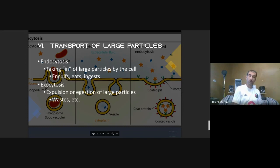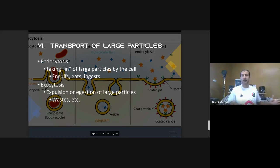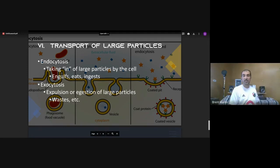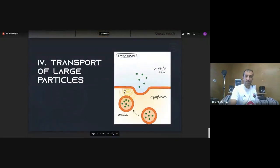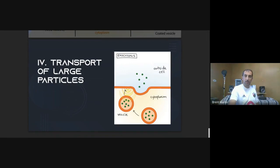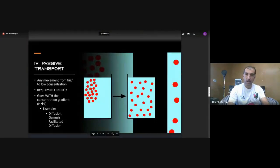For very large particles that can't go through a membrane protein, the plasma membrane folds in and engulfs them, forming a little food package inside the cell — that's endocytosis. The prefix 'endo' means 'in.' Exocytosis is the opposite: waste particles are delivered by a vesicle, a small piece of the plasma membrane, which folds into the membrane like play-doh and expels those waste particles outside the cell.